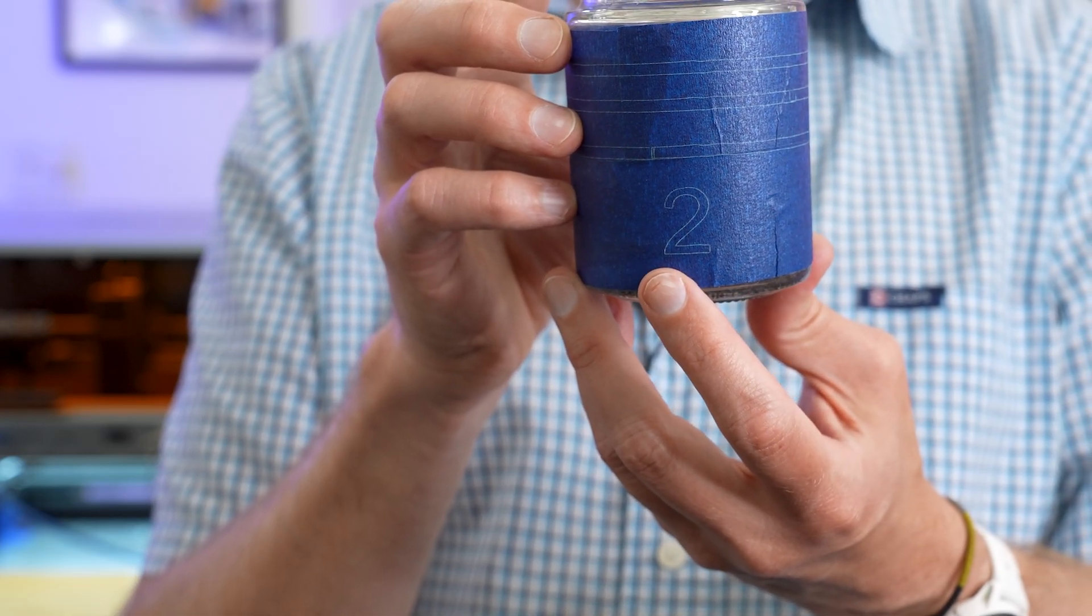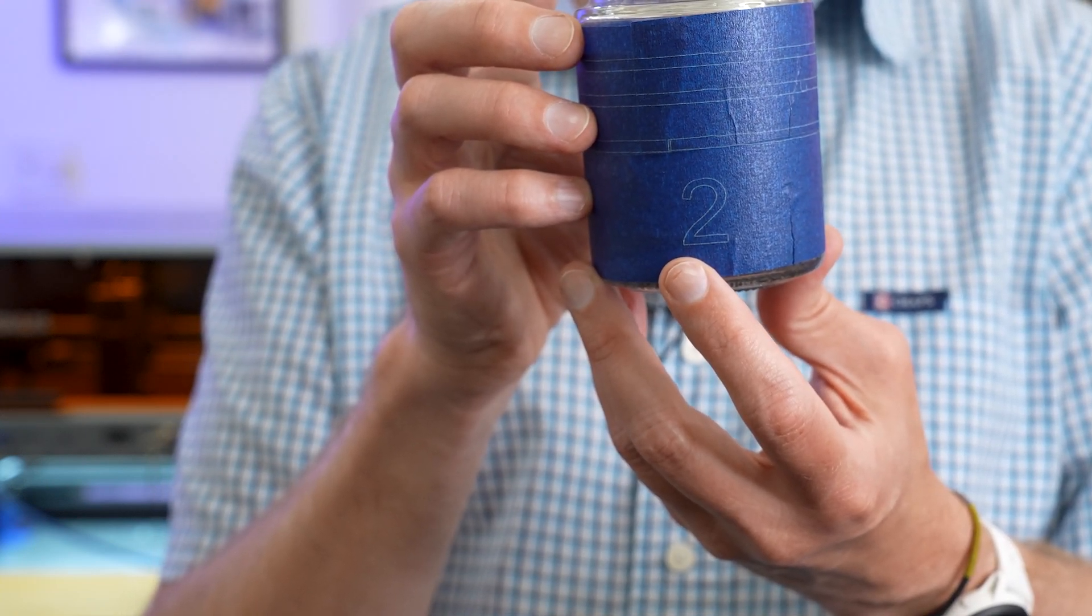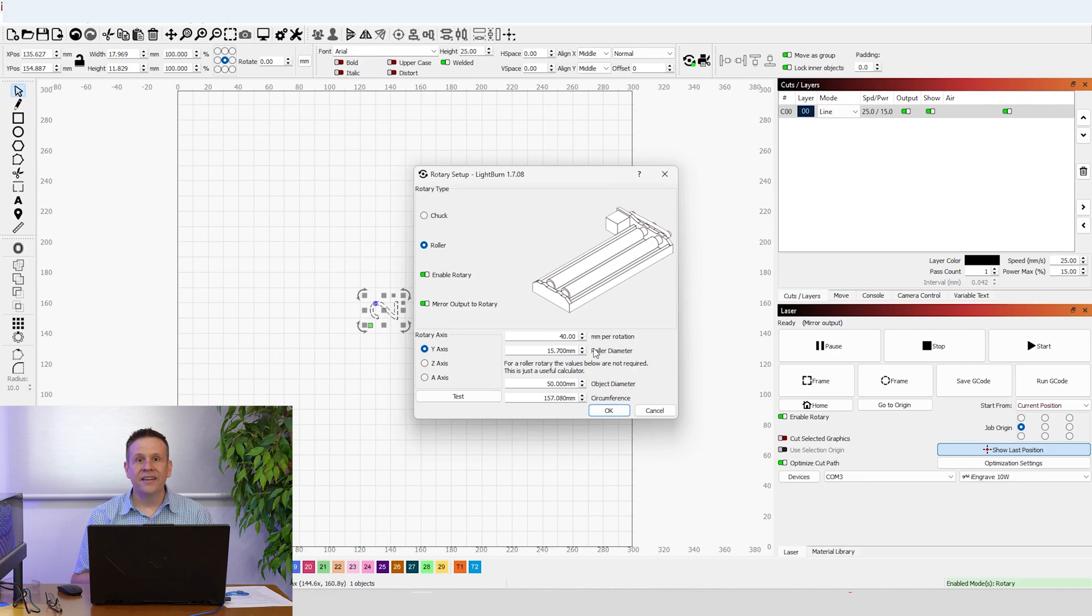Mirror output to rotary. That's all I have to do is click that and I can do another test engraving with that number two. There we go. I got it on the second try. I guess it only ever was a 50-50 chance if I got it right on the first try. The distance calibration is checked. It looks great and we checked the orientation for the proper mirror output.